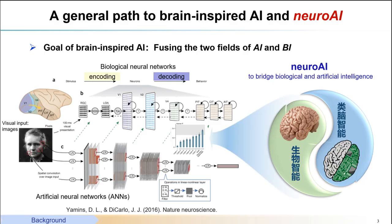In our opinion, the ultimate goal of neural AI is to find a path to bridge and in-depth fusion of biological and artificial intelligence. Many researchers in the field have dedicated to find the link between the two fields. Dr. Yamins and Professor DiCarlo have proposed a promising solution: as we ask the biological brain and AI models to perform the same task, we record the neural activity from the biological brain and extract multi-level image features from the AI models, and then find the correspondence between the two models. This correspondence can be used as guidance for future design of AI models and then backwards change the functional organization of the biological brain.